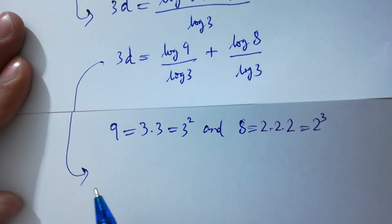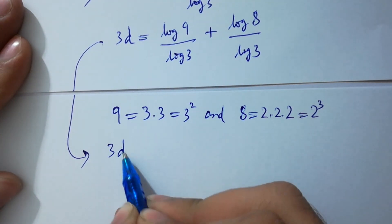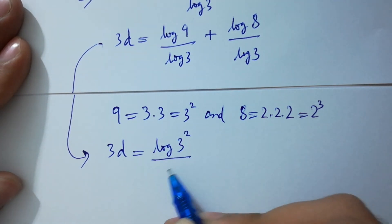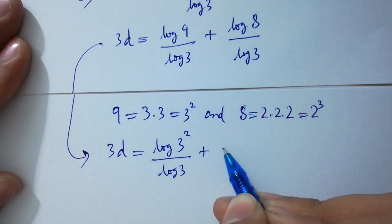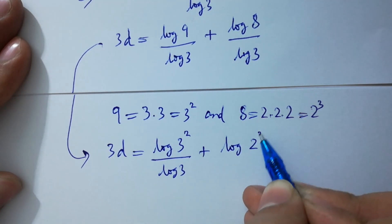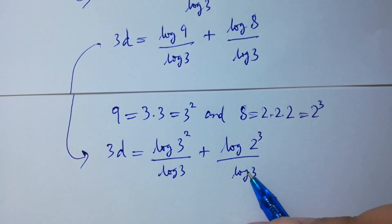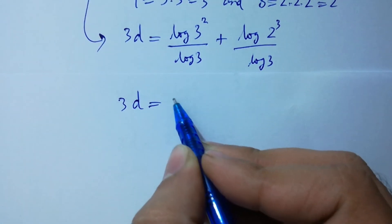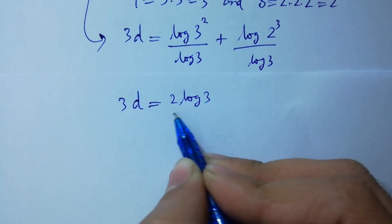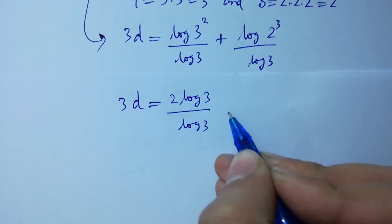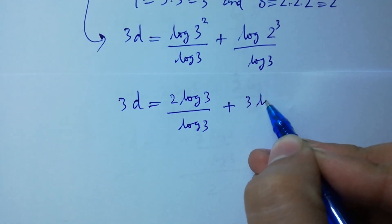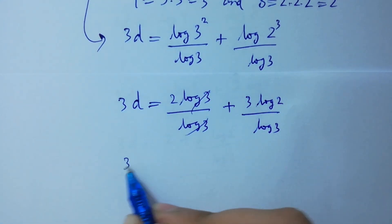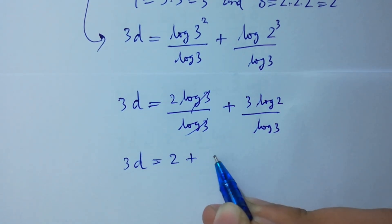So 3d equals log(3 squared) over log 3 plus log(2 cubed) over log 3. Log 3 squared over log 3: since log(m^n) = n·log m, the log 3's cancel, giving 3d equals 2 plus 3·log 2 over log 3.